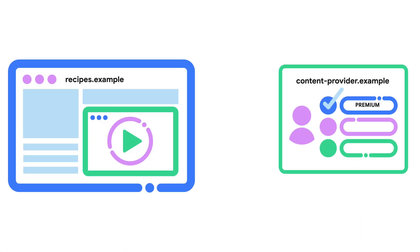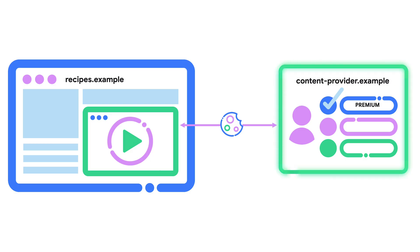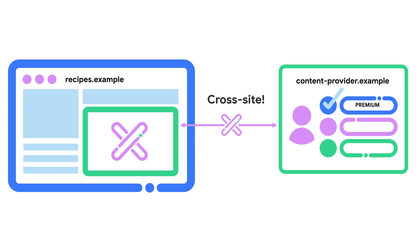Here is another user journey. Accessing authenticated embedded content may rely on the same mechanism. Say you want to let users enjoy subscription-only videos. You use contentprovider.example player embedded on recipes.example. Contentprovider.example needs to know that the user has a subscription, and the provider may need to verify user identity with the information stored in a session cookie. This cookie is normally set in a top-level context of contentprovider.example and is treated as third-party when contentprovider is embedded on other sites.